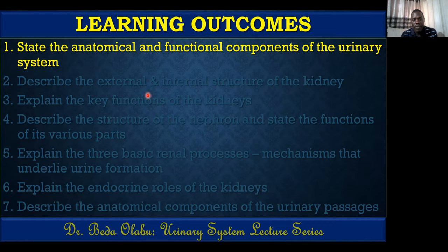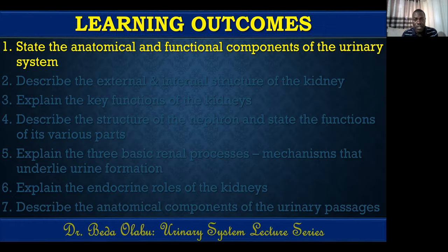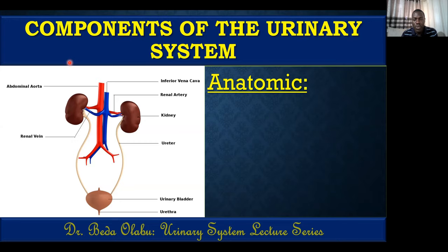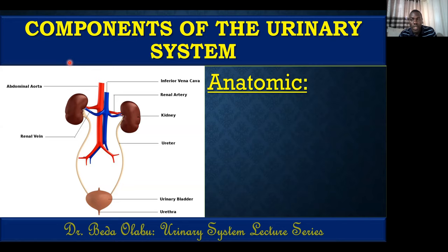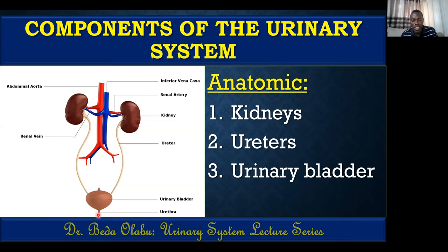The first agenda is the components of the urinary system. From an anatomical point of view, we name the organs that constitute the urinary system. From above downwards: we start from the kidneys, then the ureters, after that the urinary bladder, and finally the urethra. Those four organs are the anatomical components of the urinary system.